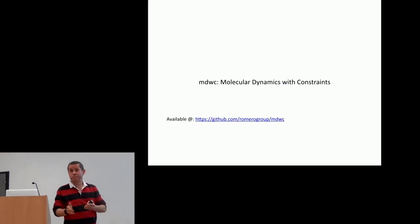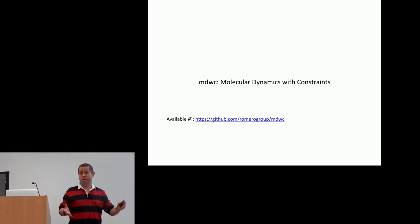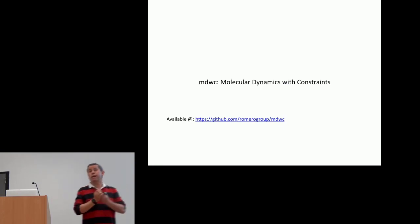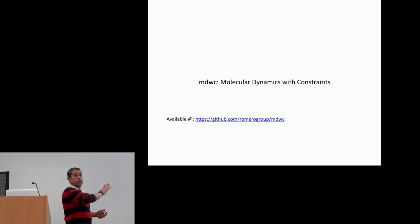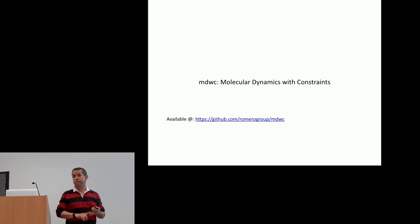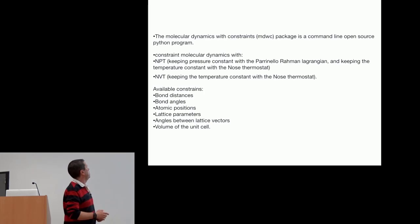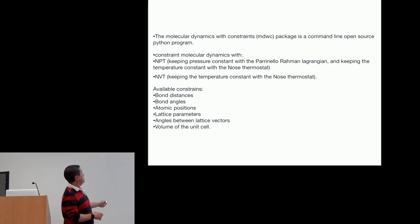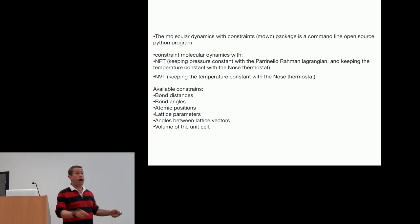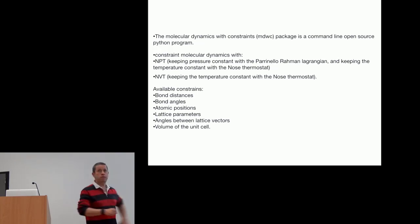After trying many different possibilities, I gave up and decided to build a package on top of Abinit. The big difference with respect to whatever is included in Abinit is that besides having molecular dynamics — NPT and NVT simulation — we have also implemented many different constraints. We can impose bond distances, bond angles, atomic positions, lattice parameters, angles between lattice parameters, angles between different atoms, and volume of the cell.